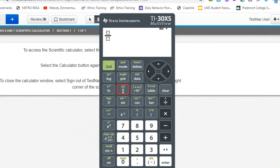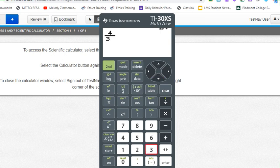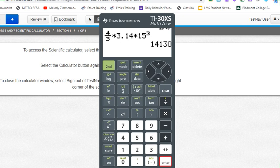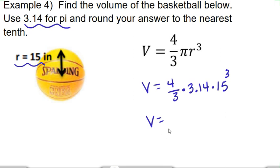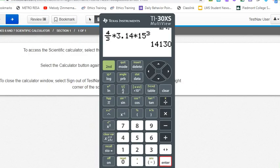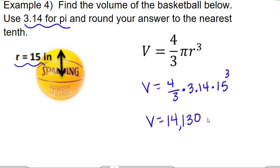Alright, clear this. I'm going to do 4 thirds, so 4 over 3 times 3 decimal 1.4 times 15. Times 15 cubed, so up to the third power, and hit enter. 14,130. And I need my units inches cubed because the volume is always cubed. And that is how you find the volume of a sphere.